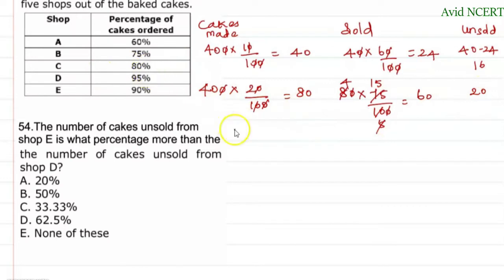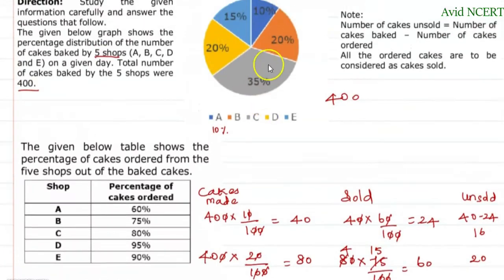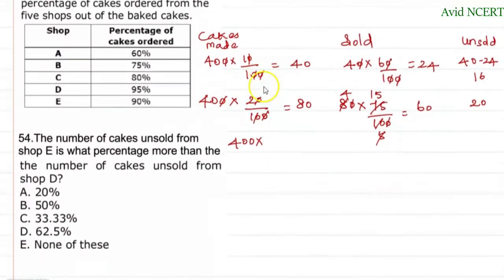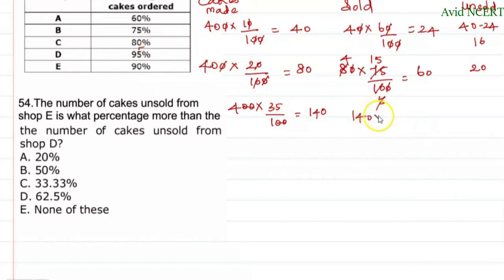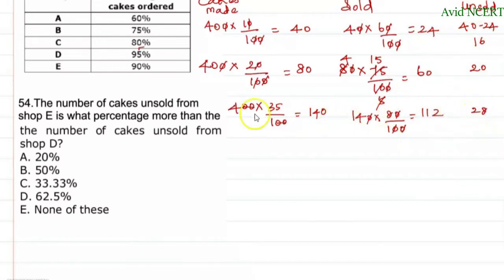For shop C: 400 × 35/100 = 140 cakes made. The percentage of cakes ordered from shop C is 80%, so cakes sold = 140 × 80/100 = 112. The unsold cakes = 140 − 112 = 28.